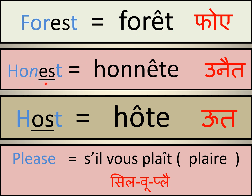The next word is 'honest.' Again, E-S is there — S will be deleted and we put a circumflex, giving 'honnête.' Notice I pronounce the T in 'honnête' — why? Because there is a vowel after the T, and whenever there is a vowel after T, you pronounce it. Next word is 'host': again a vowel and S, so the S is deleted and a circumflex is added, giving 'hôte.' The meaning is the same — host, hôte.